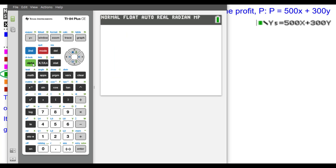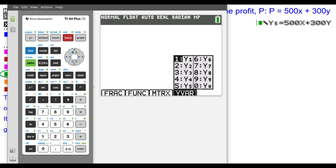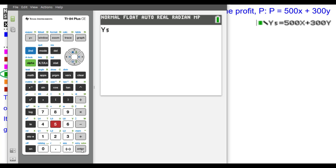So when I go off to the home screen and evaluate Y5, it's going to evaluate Y5 with those values of X and Y. You get 3600.